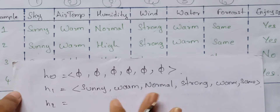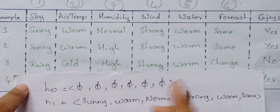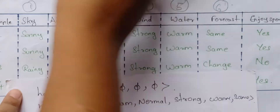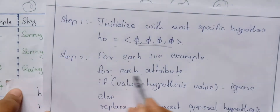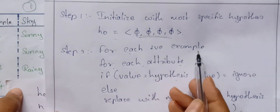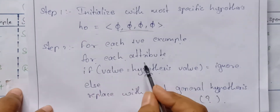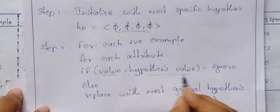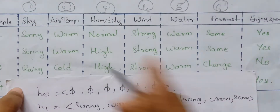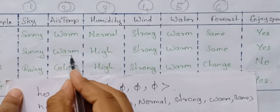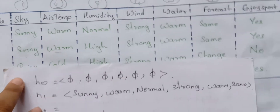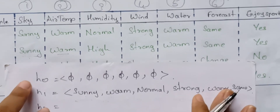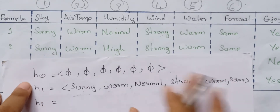Now I am going to explain H2. H2 — is it a positive example or a negative example? It is a positive example. So for each positive example, for each attribute, check if the value is equal to the hypothesis value.